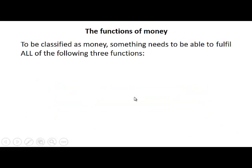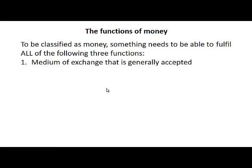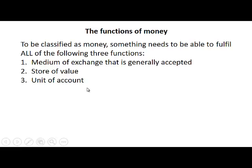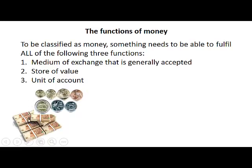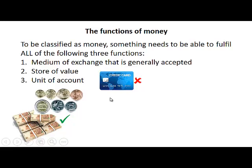So, the functions of money. To be classified as money, something needs to be able to fulfill all of the following three functions: it must be a medium of exchange that is generally accepted, it must be a store of value, and it is also a unit of account. Notes and coins can be regarded as money because they fulfill all those functions. If you look at a credit card, it can be used as a medium of exchange and is generally accepted, but it's not a store of value because there's no money in it — it's permission to use an overdraft. Therefore, it's not money.